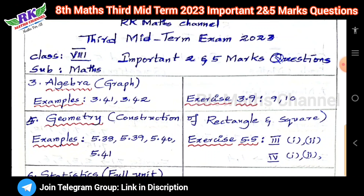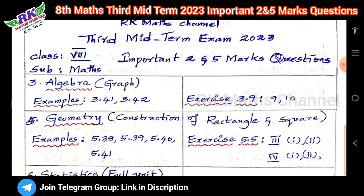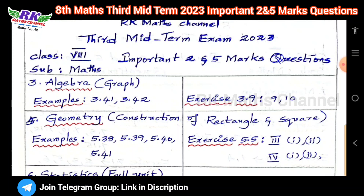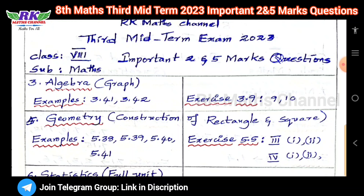Rectangle and square — that's the third term examples. The examples are 5.38, 5.39, 5.40, 5.41. Exercise 5.5 has two problems. These are graph and geometry units.